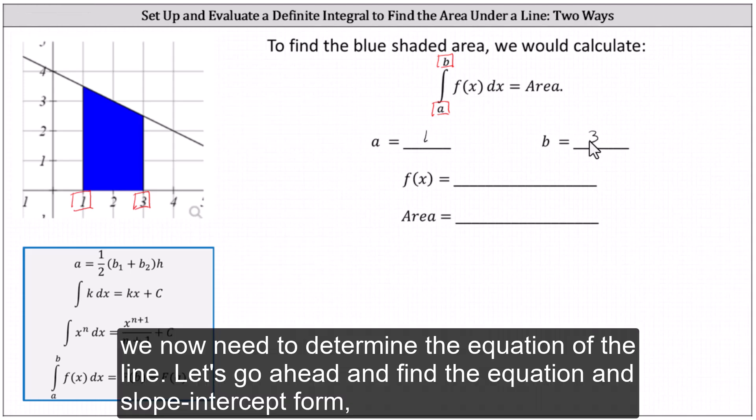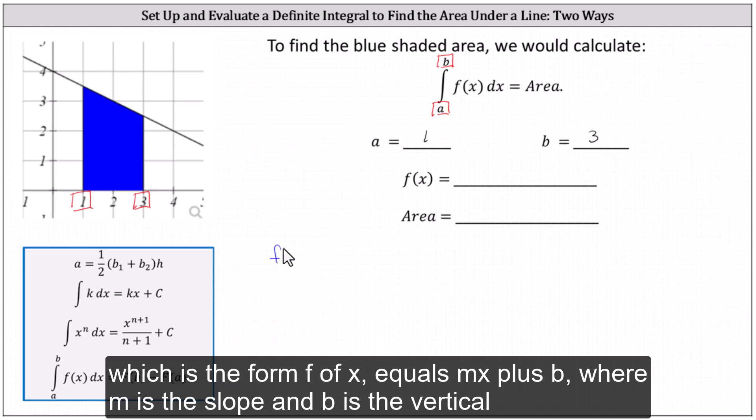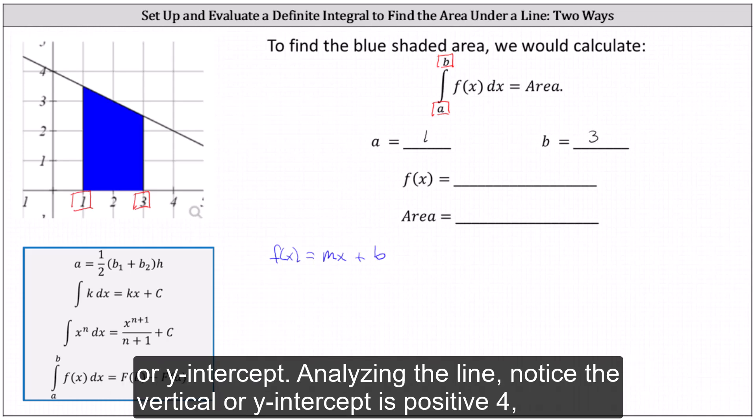We now need to determine the equation of the line. Let's go ahead and find the equation in slope-intercept form, which is the form f(x) equals mx plus b, where m is the slope and b is the vertical or y-intercept.